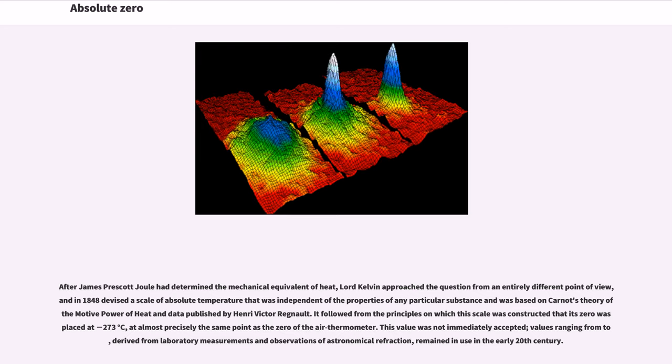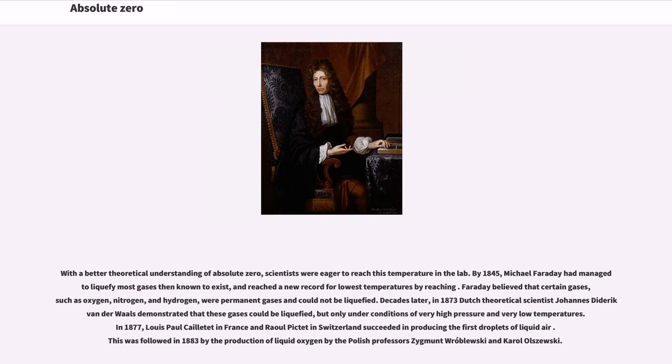This value was not immediately accepted; values ranging from 210 to 270 degrees Celsius, derived from laboratory measurements and observations of astronomical refraction, remained in use in the early 20th century. With a better theoretical understanding of absolute zero, scientists were eager to reach this temperature in the lab. By 1845, Michael Faraday had managed to liquefy most gases then known to exist, and reached a new record for lowest temperatures by reaching minus 130 degrees Celsius.